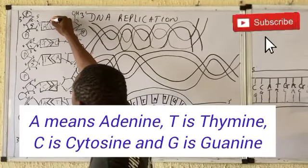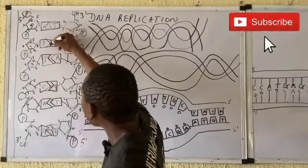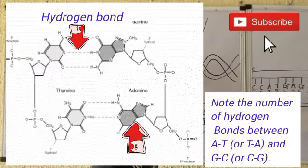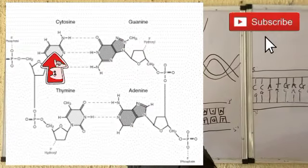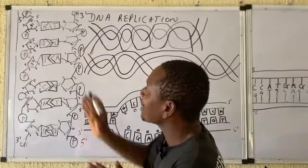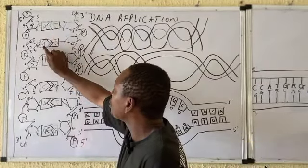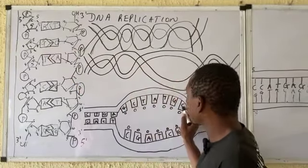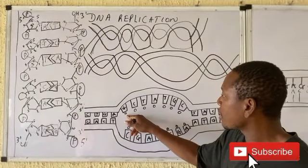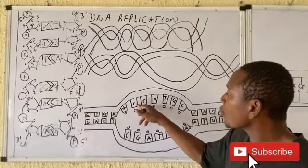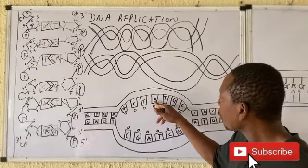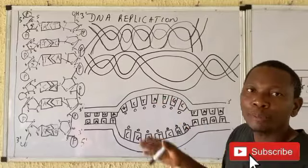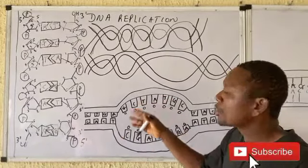Note that the AT base pair has two hydrogen bonds, while the GC base pair has three hydrogen bonds. Adenine and guanine are purines — they possess two rings, while thymine and cytosine are pyrimidines — they possess a single ring. Remember: A is always complementary to T, and G is always complementary to C. So if given a sequence, the complementary base of C is G, and the complementary base of A is T.